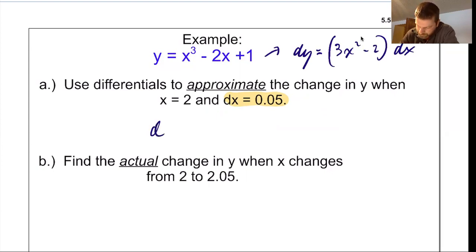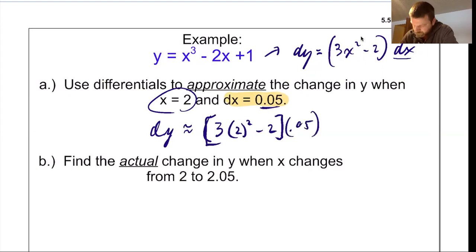So in this particular case, dy would be approximately equal to 3 times 2 squared, because I'm using an x value of 2, minus 2, all times a dx of 0.05. That's equal to, let's see here, this is 12 minus 2 is 10 times 0.05 is 0.5, 0.5. So I've got a change of 0.5, I could just do that in my head. That's one of the advantages of differentials is sometimes the math gets easier, but it's an approximate change of 0.5.